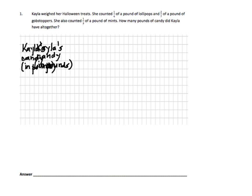We have Kayla's candy in pounds. Let's underline the question: how many pounds of candy did Kayla have altogether? Let's write the answer to that question with a blank for what the answer will be. Kayla had blank pounds of candy altogether.